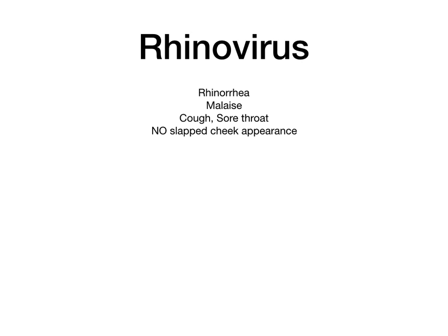Rhinovirus is the causative agent for the common cold. They would show you rhinorrhea, malaise, cough, and sore throat. While this can sound somewhat similar to parvovirus B19, there would never be a slapped cheek appearance with the common cold. If you see a picture of two red cheeks in a child, it's parvovirus B19 — not rhinovirus — so it's not ICAM-1.